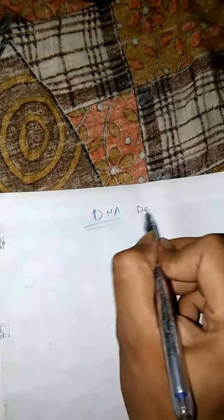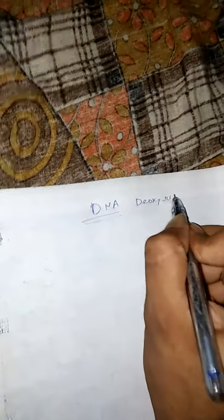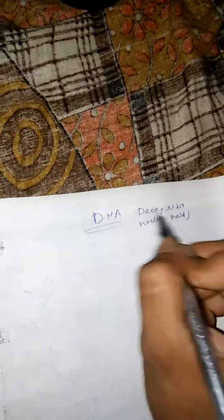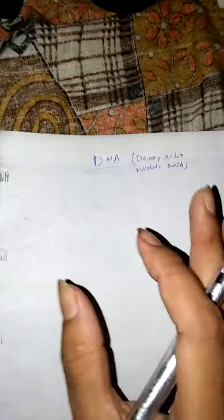Hello guys, today we will know about the genetic material of any living organism. It is DNA, it is deoxyribonucleic acid. It is a very essential component of any living organism, that is why it is known as genetic material.